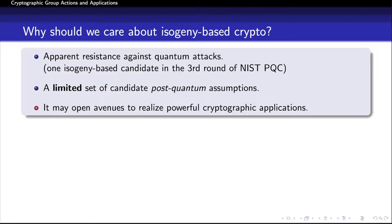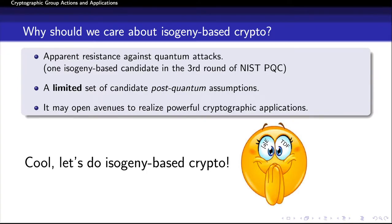Another reason to care about isogeny-based assumptions is that they may allow us to build powerful cryptographic applications, in particular because the power of these assumptions from a cryptographic standpoint has not been thoroughly explored. We have many reasons to build isogeny-based crypto applications, and there are plenty of primitives that have not been constructed from these assumptions. So let's get ready to do isogeny-based crypto.